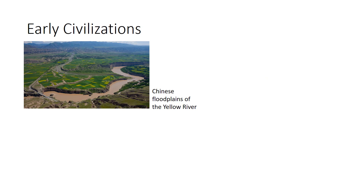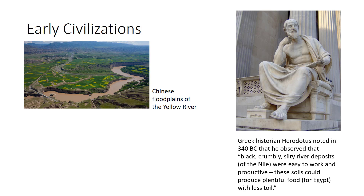Most early civilizations in the Old World grew and thrived on the rich soil and waters of major river floodplains. Early Chinese culture began to develop 6,000 to 7,000 years ago on floodplains of the Yellow River, where periodic flooding deposited fresh soil for agriculture and canals could carry irrigation water. The same is true in the Mideast. Greek historian Herodotus left us notes about the dependence of Egypt on soil supplied by flooding of the Nile. He noted in 340 BC that he observed black, crumbly, silty river deposits were easy to work and productive. These soils could produce plentiful food with less toil.